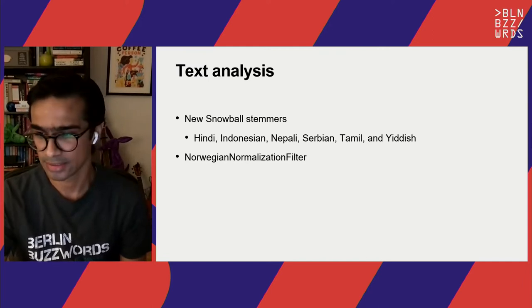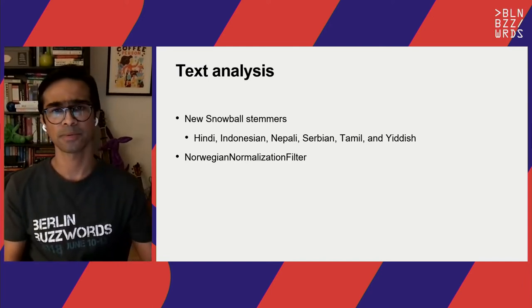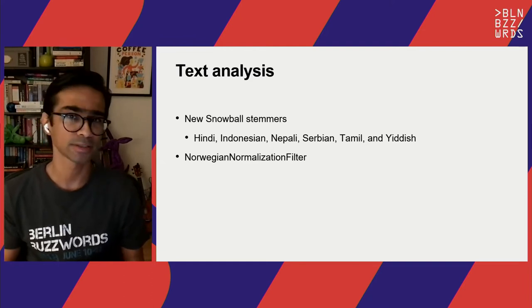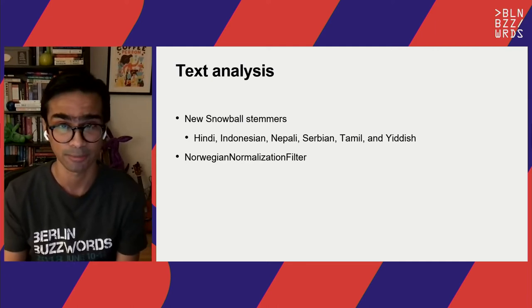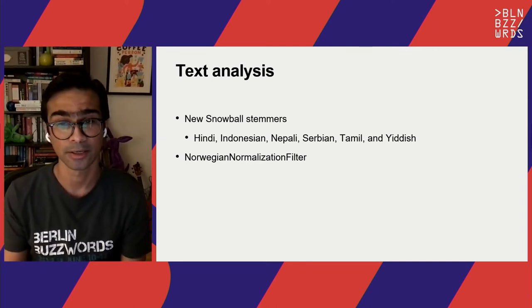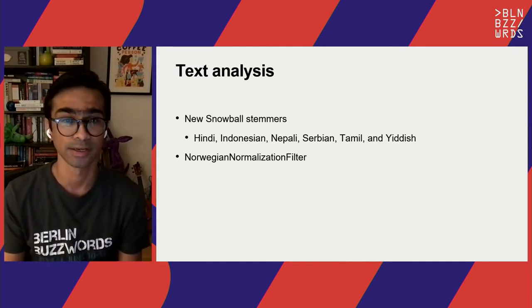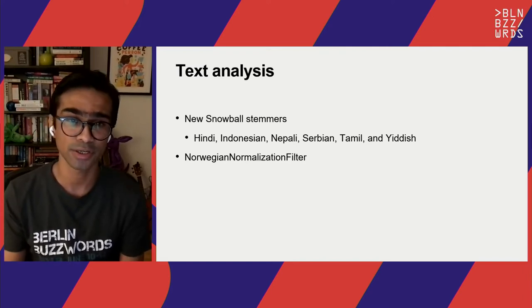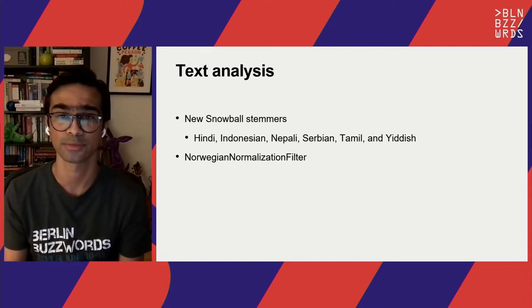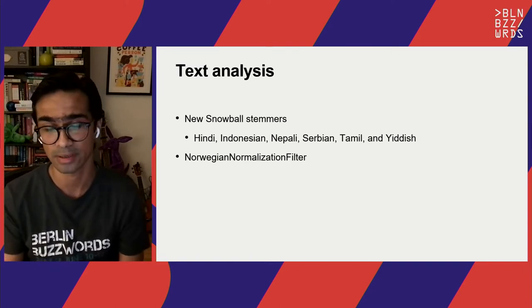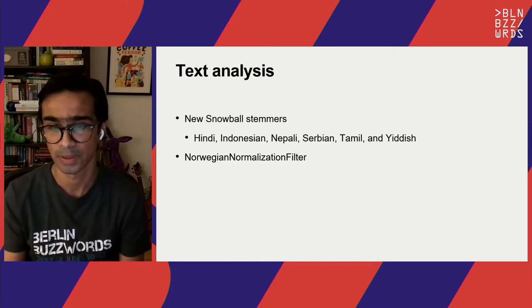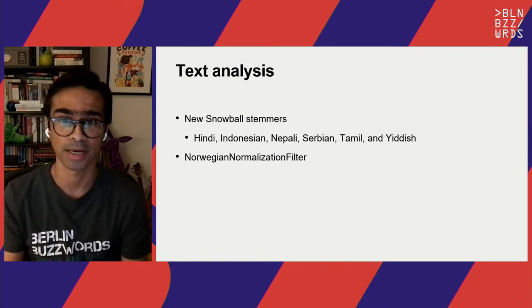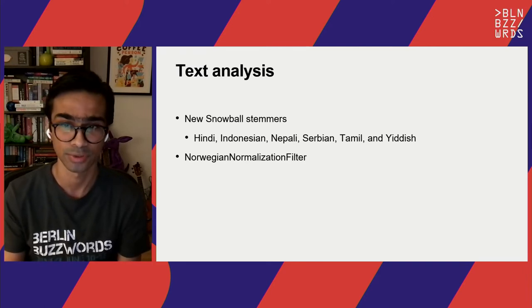Next up is text analysis. With this release, there's a whole bunch of new Snowball stemmers that have been added, providing better language capabilities for languages like Hindi, Indonesian, Nepali, Serbian, Tamil, and Yiddish. There's also a new Norwegian normalization filter added as part of the 9.0 release, making this version of Solr much richer and more capable when it comes to handling languages outside of English and other previously supported languages.